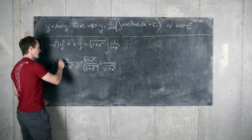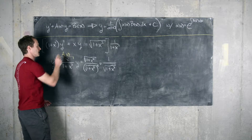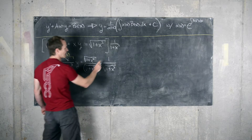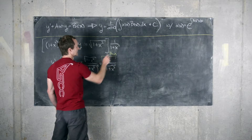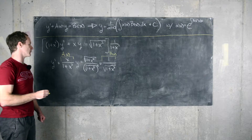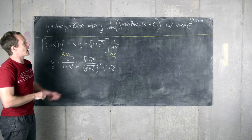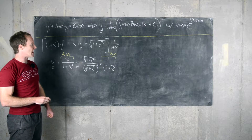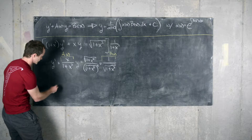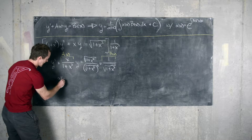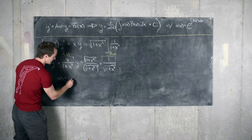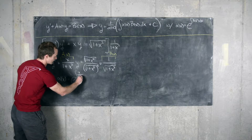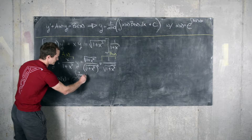Now we can see that playing the role of the function a is x over one plus x squared, and playing the role of the function b is one over the square root of one plus x squared. Our next goal is to calculate the integrating factor alpha, and then we can go ahead and solve the differential equation. So alpha of x is equal to the exponential of the antiderivative of x over one plus x squared, dx.